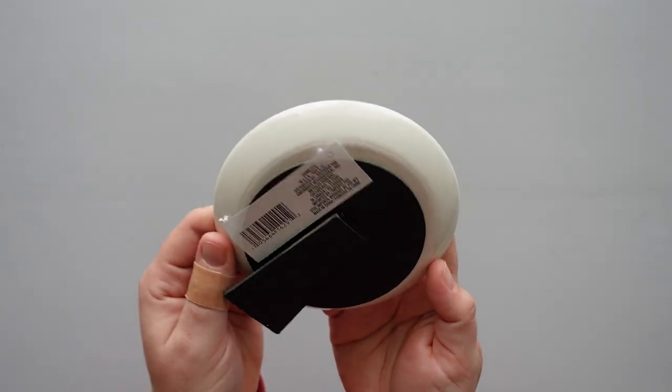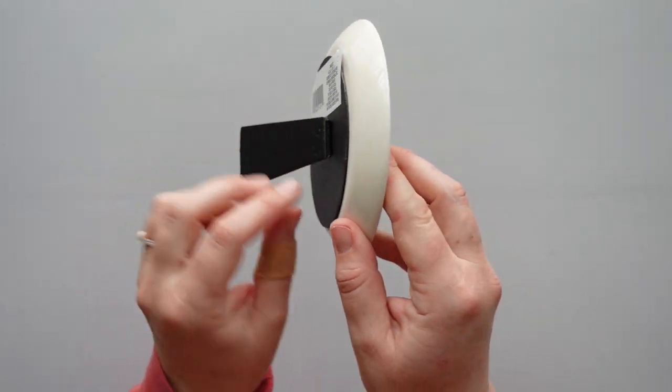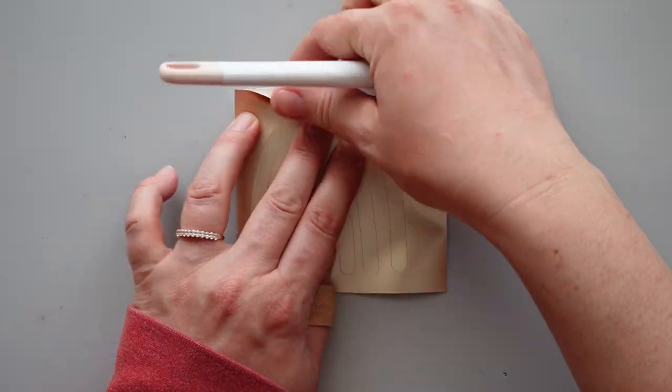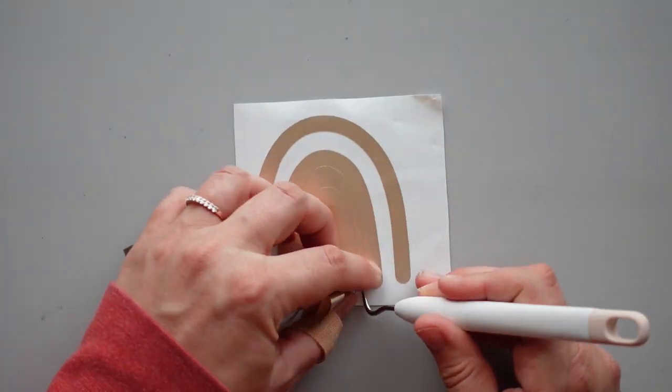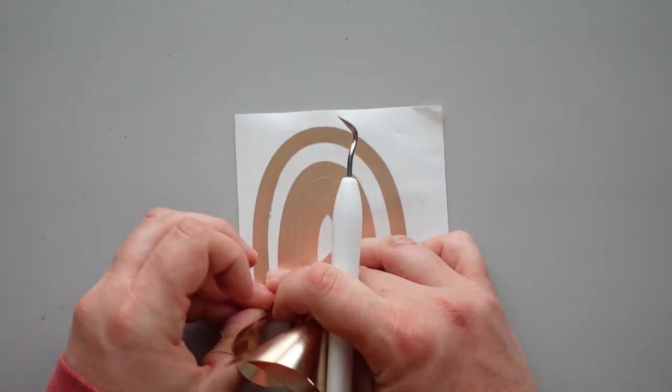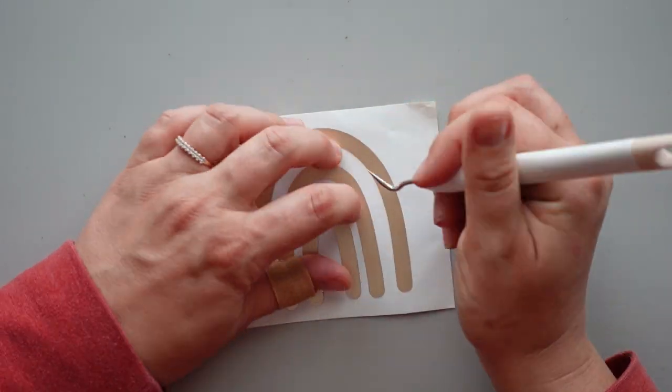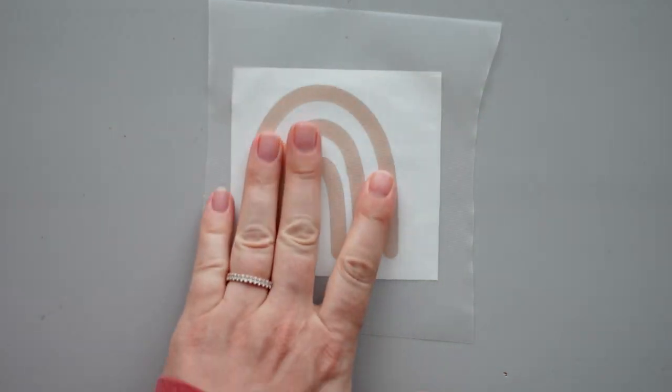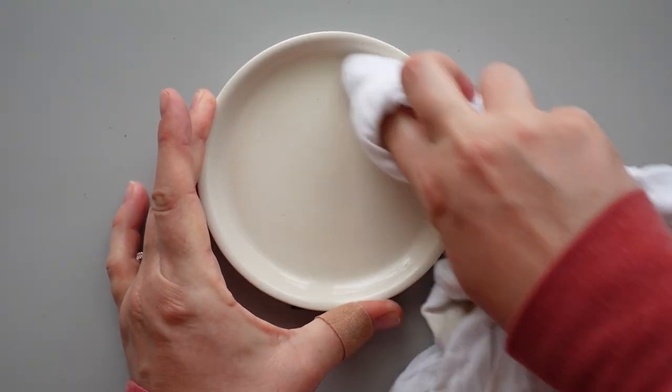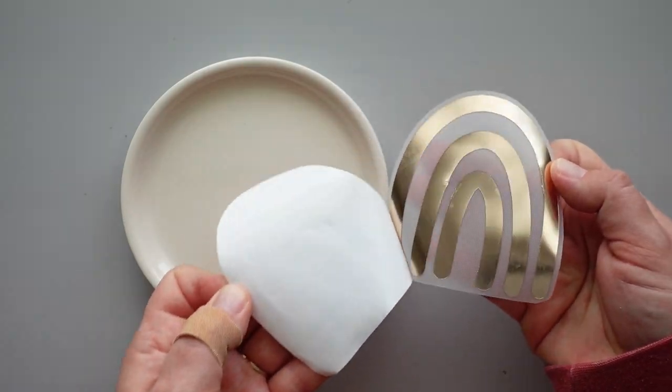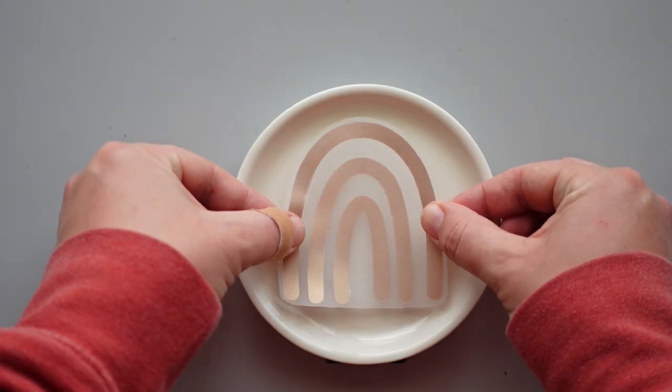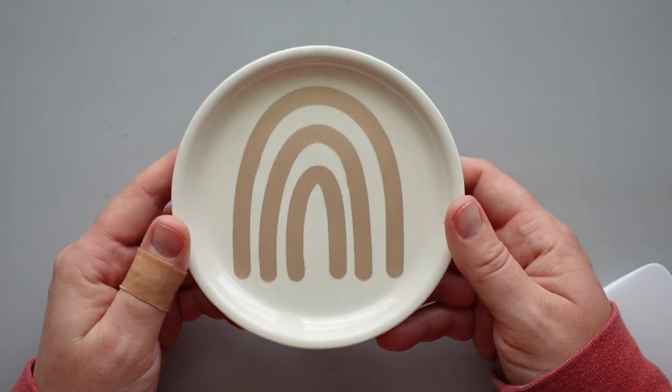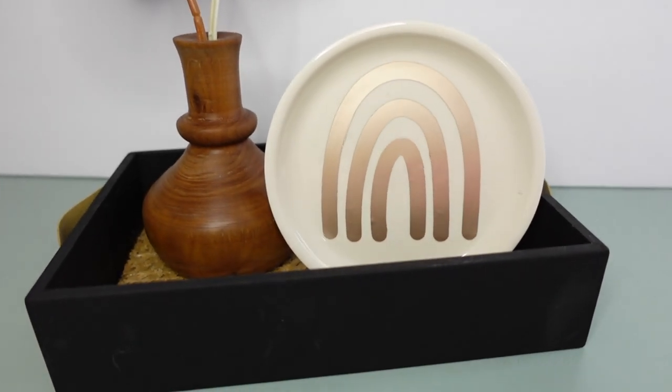This next project took no time at all. I started with the ceramic circular frame I picked up at Dollar Tree. I used my Cricut machine to cut a rainbow out of rose gold metallic vinyl. While I love the look of the metallic vinyl, I find it is a bit difficult to weed. Once the weeding was complete, I placed a piece of transfer tape over the rainbow. I cleaned the frame with some rubbing alcohol and placed the rainbow in the center of the frame. After removing the transfer tape, this easy project was finished. I really loved the way this one turned out.